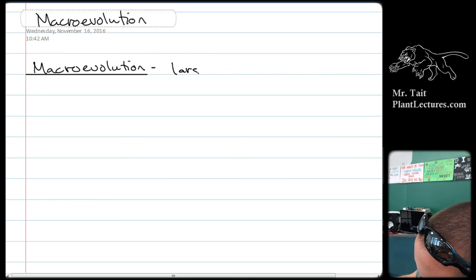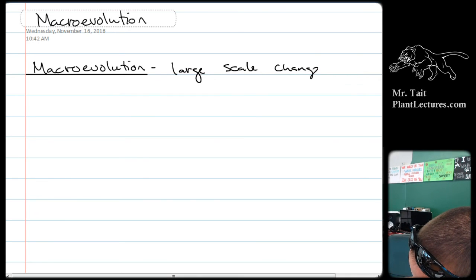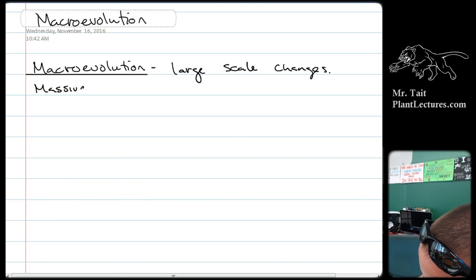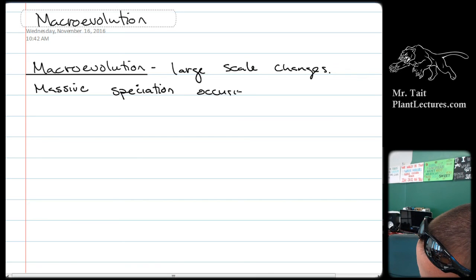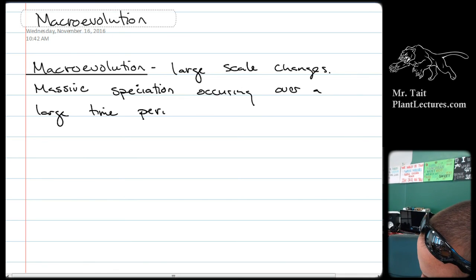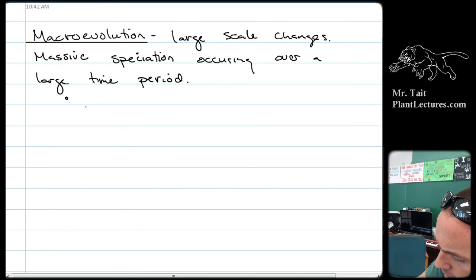Okay, so large-scale changes. So massive speciation occurring over a large time period. Okay, and there's two different theories as to the way that this happens.